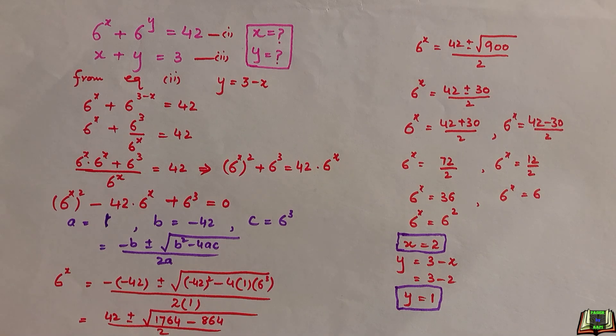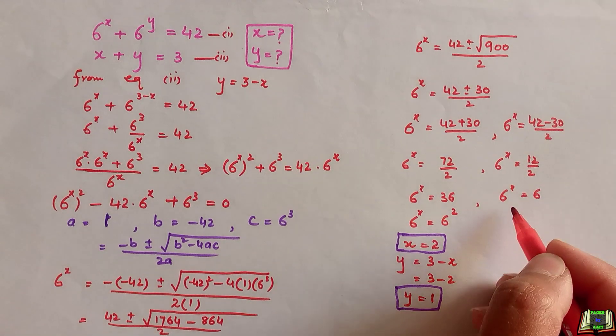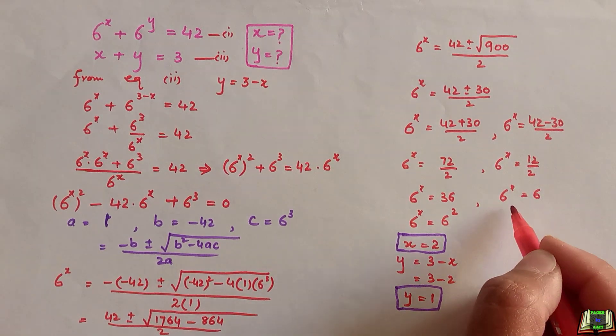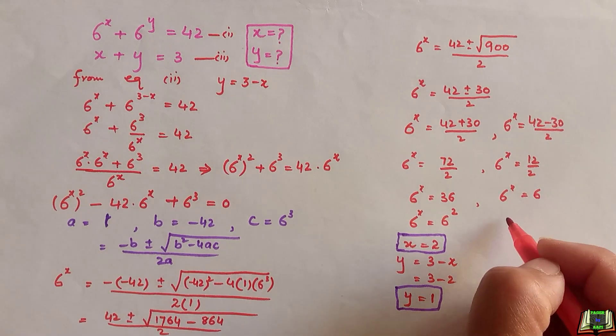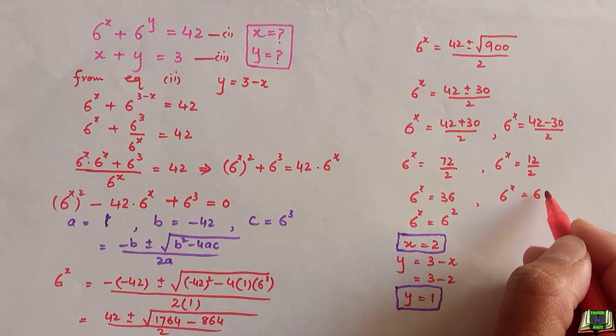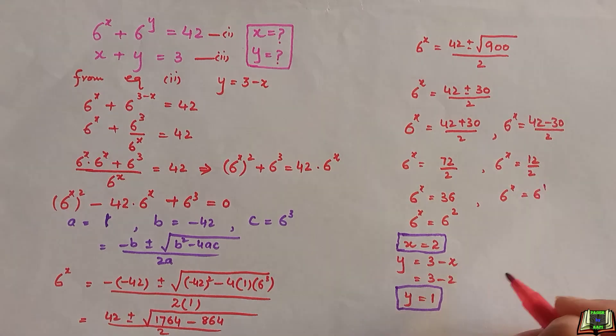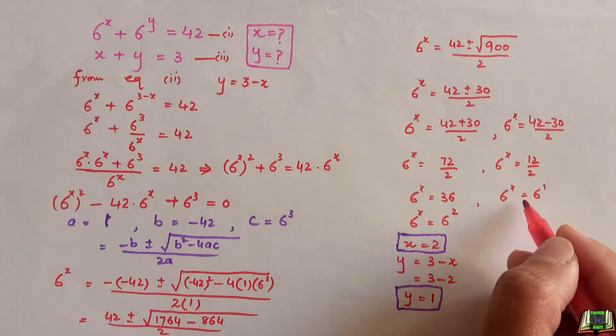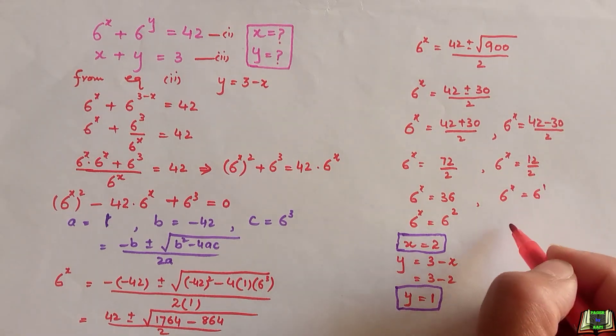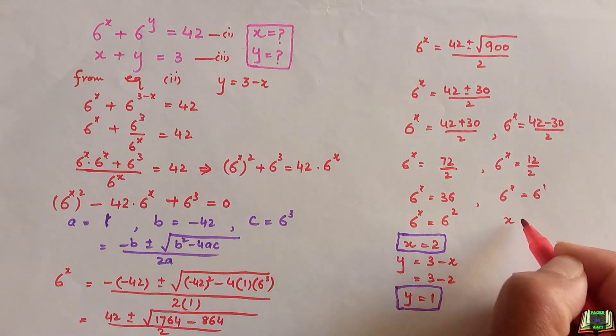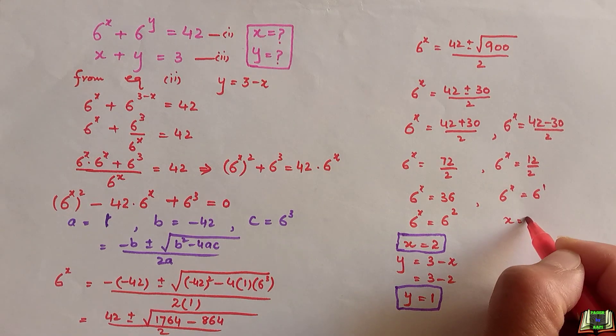For the second case, 6 to the power x equals 6. We can write this 6 as 6 to the power 1. Equating the powers, we get x equals 1.